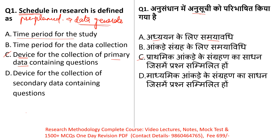Option B — 'time period for data collection' — data collection is not a time period, so this is also wrong. Option D — 'device for the collection of secondary data containing questions' — is incorrect because in a schedule, whatever questions you ask your respondents, the data collected is primary, not secondary. The right answer is Option C: device for the collection of primary data containing questions.